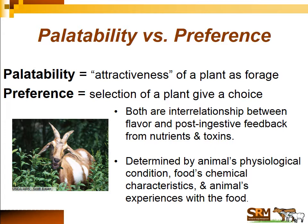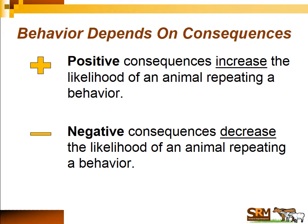Both of these terms involve an interrelationship between post-ingestive feedback and the flavor of the food. An animal eats a food and it's connected to post-ingestive feedback in the form of nutrients and toxins. Whether an animal chooses a plant or not is really a relationship between the animal, the plant characteristics, and the animal's experience with that food. At the heart of this is that behavior depends on consequences — a basic principle made popular by B.F. Skinner: if behavior is followed by positive consequences, the animal will repeat it; if negative, it will not.